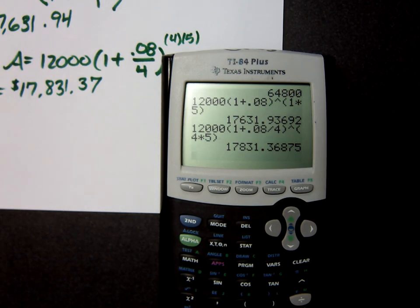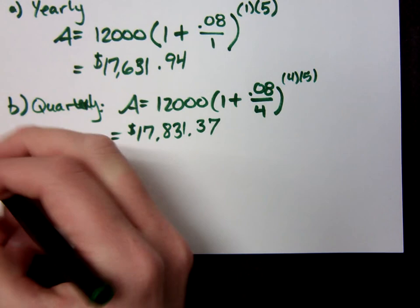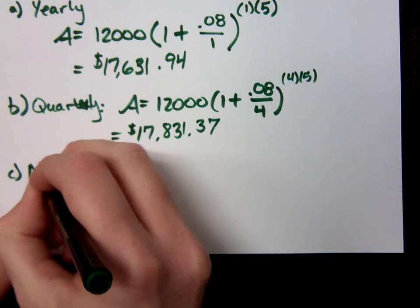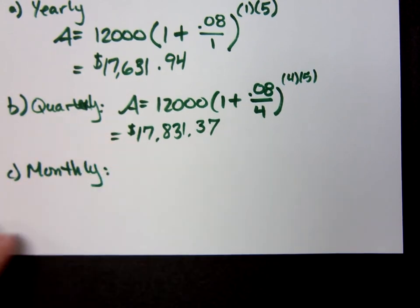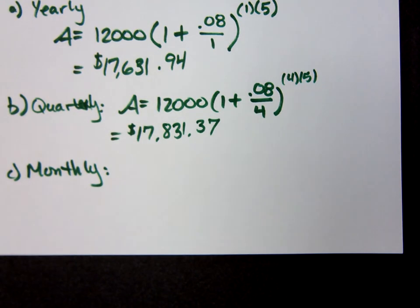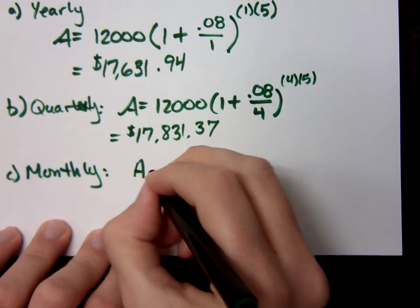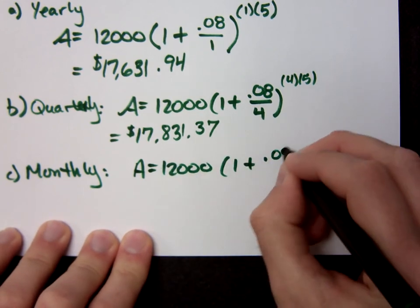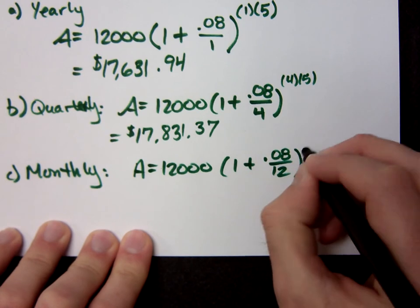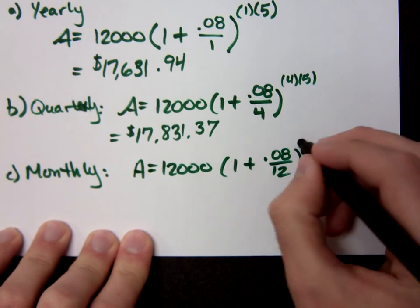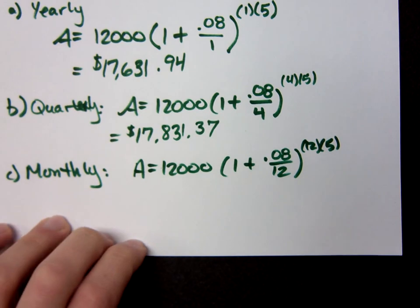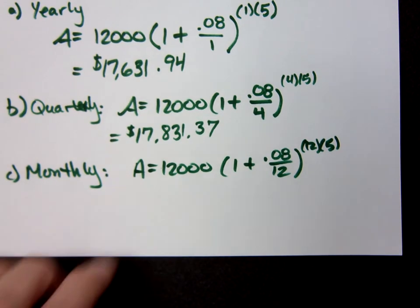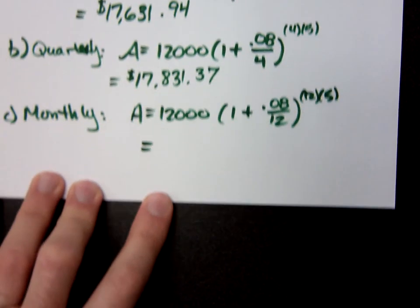What if I go crazier? Yes, we always want more, don't we? What if we do monthly? So that's 12,000 times 1 plus .08, divided by 12, raised to the 12 times 5, for 5 years, is 60! Do you all agree?